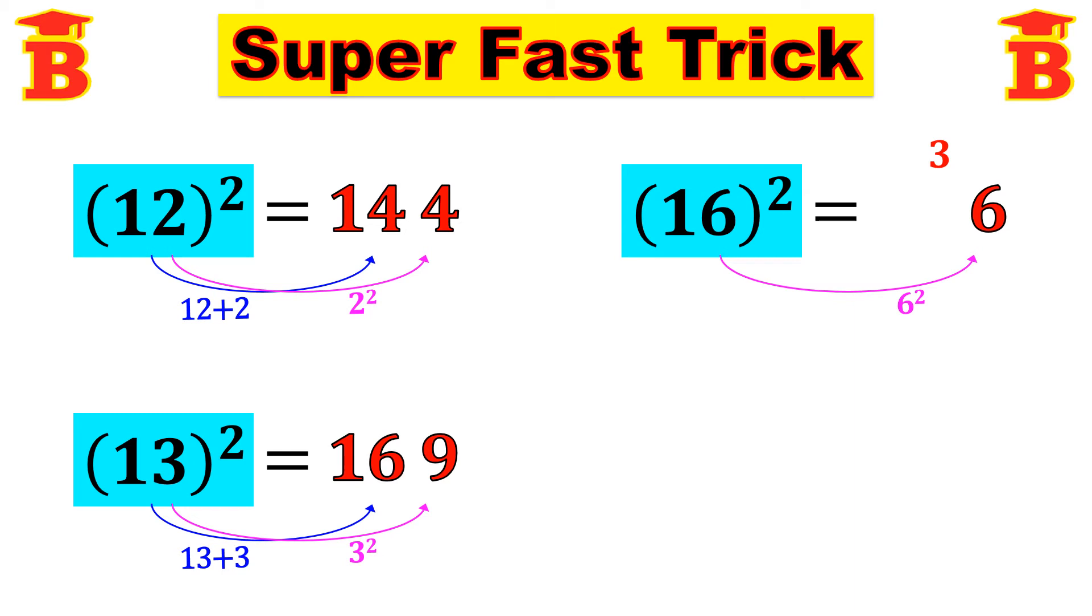Next step take the given number 16 and add with the last digit 6. That is 16 plus 6. 16 plus 6 is 22 plus carry number 3. 22 plus 3 is 25.